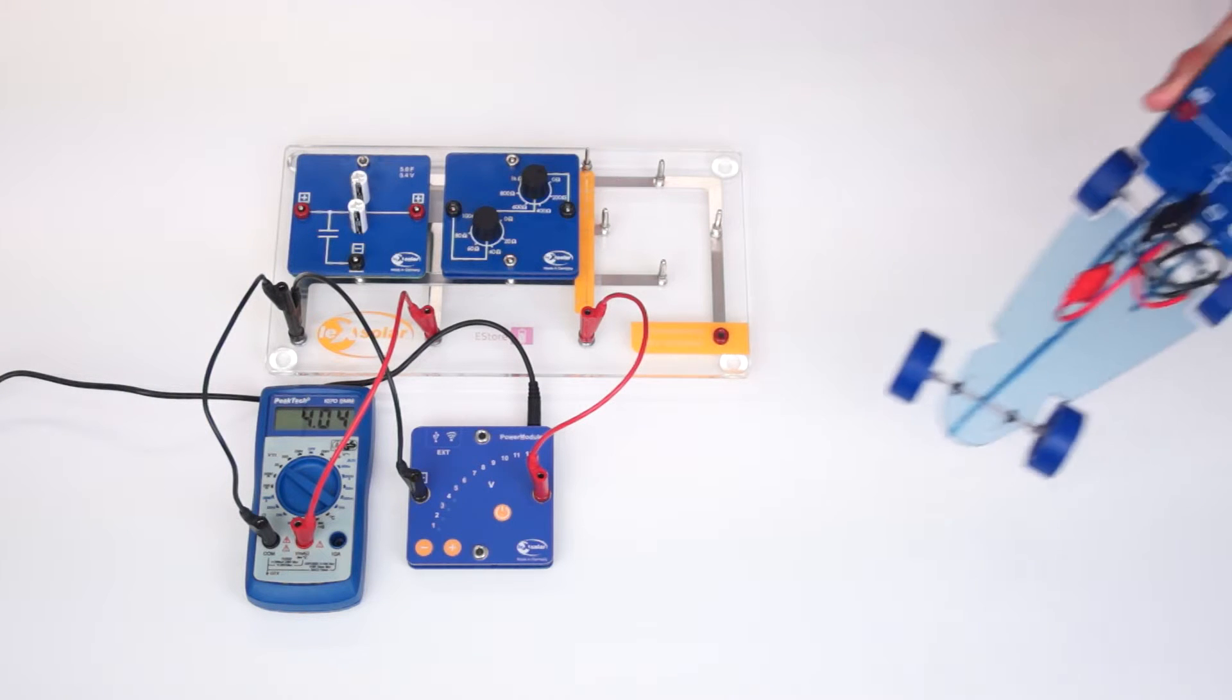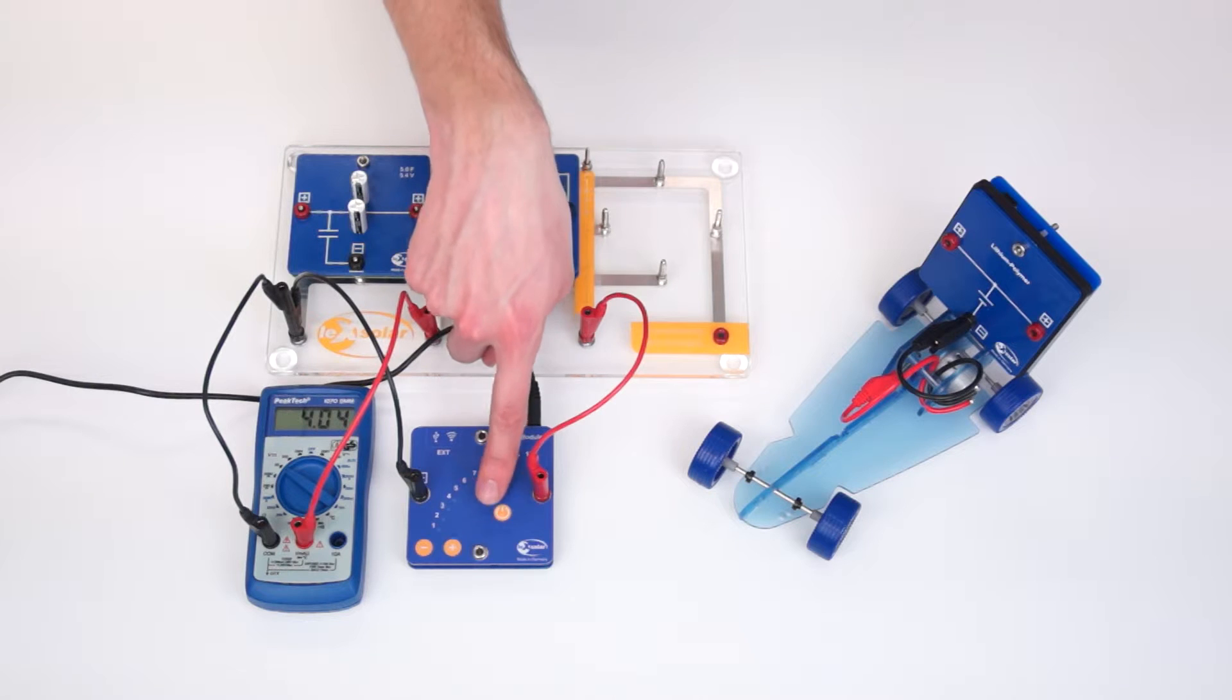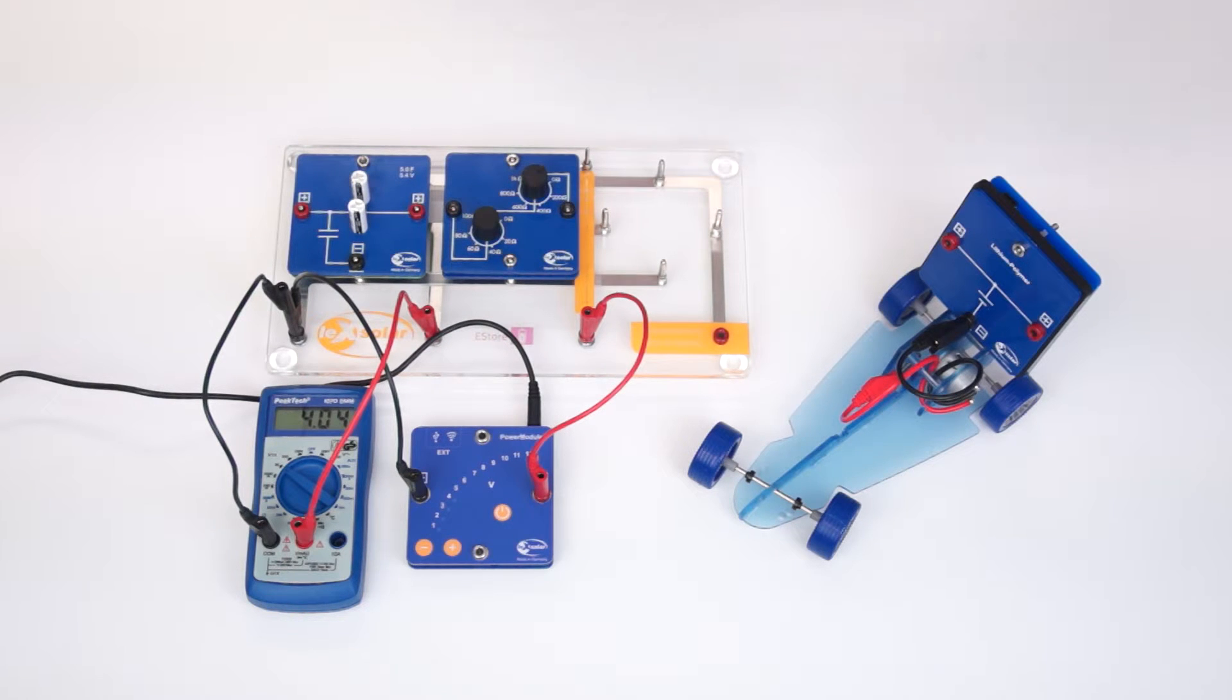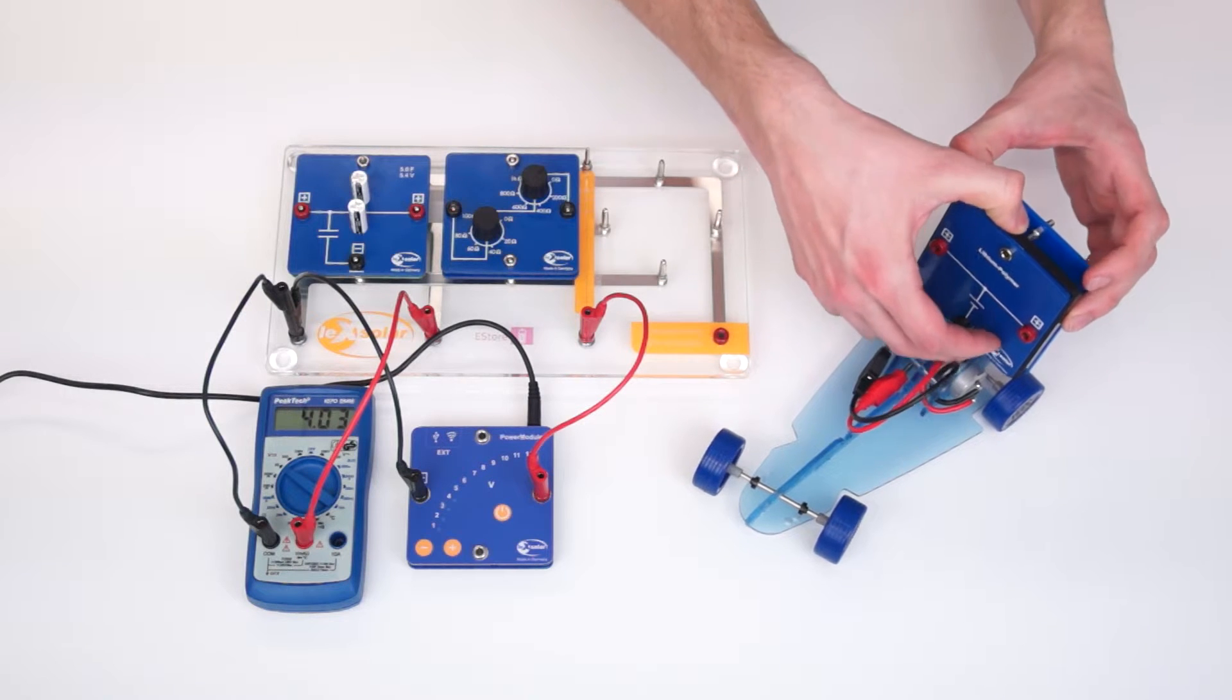Meanwhile, the capacitor should be finished loading. Its open circuit voltage is approximately 4.04 volts. It is attached to the car like the previous two batteries and put on the starting line.